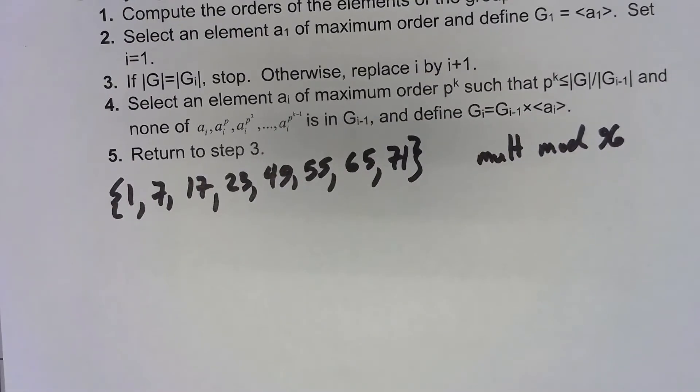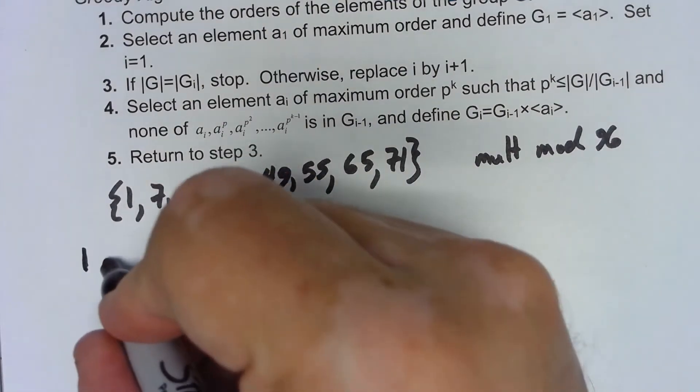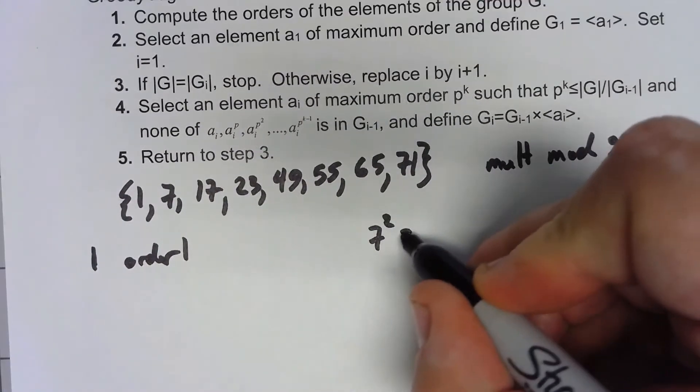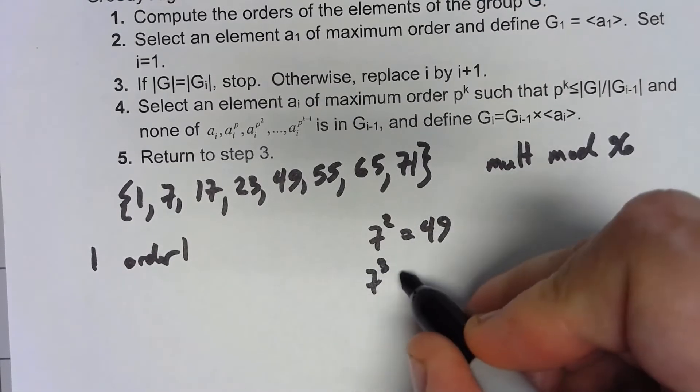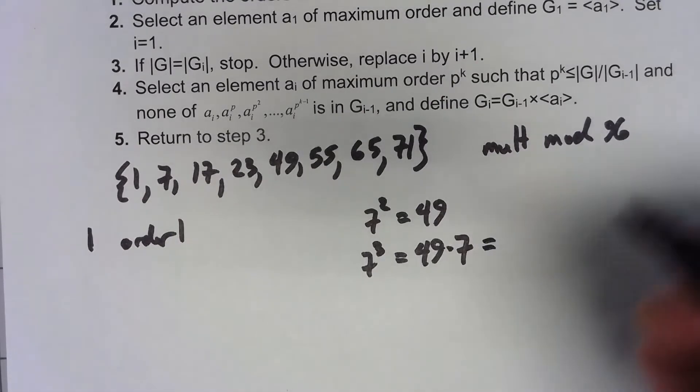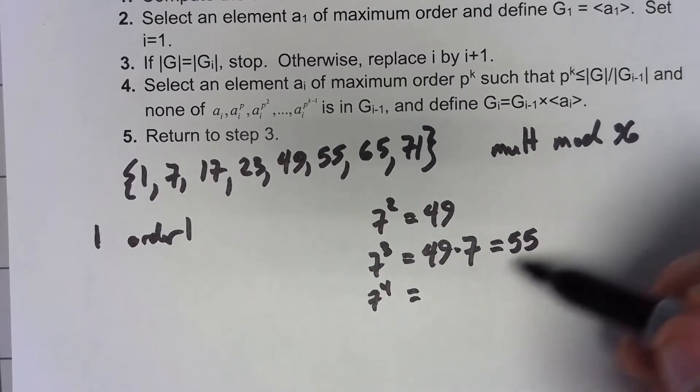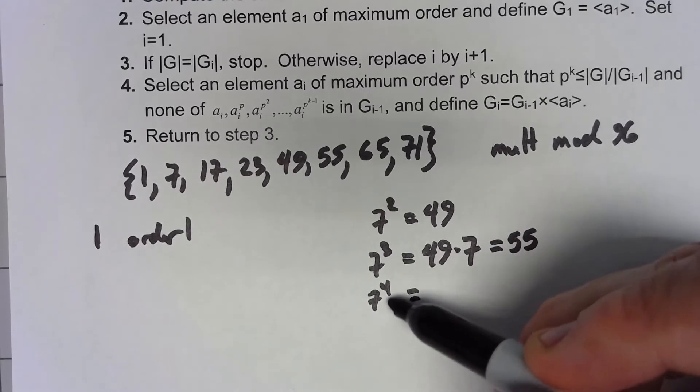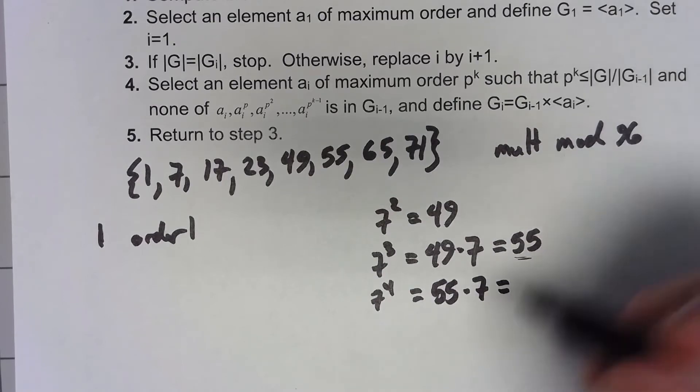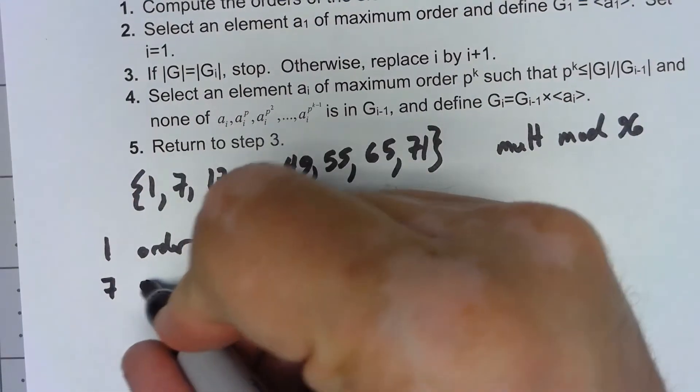Now I'm not going to waste our time going through and computing every single one of these things what their order is but it's obvious that the order of 1 is 1. And let's go through 7. So 7 squared is 49, 7 cubed we'd have 49 times 7 which when we take it mod 96 ends up being 55. Now one of the things we can do is rather than trying to figure out 7 to the 4th and then taking the mod, we can take 55 times 7 and when we take that mod 96 we end up with 1. So that means that 7 has order 4.